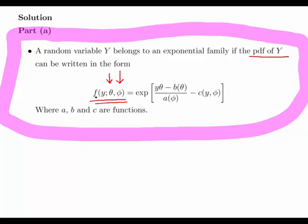So essentially the PDF of y which has these two parameters theta and phi can be written as the exponent of y theta minus b theta, where b is a function of theta divided by a phi. A is a function of phi. So they are functions there. That's a function. That's a function. And minus c which is a function of y and phi. So that is the definition there.